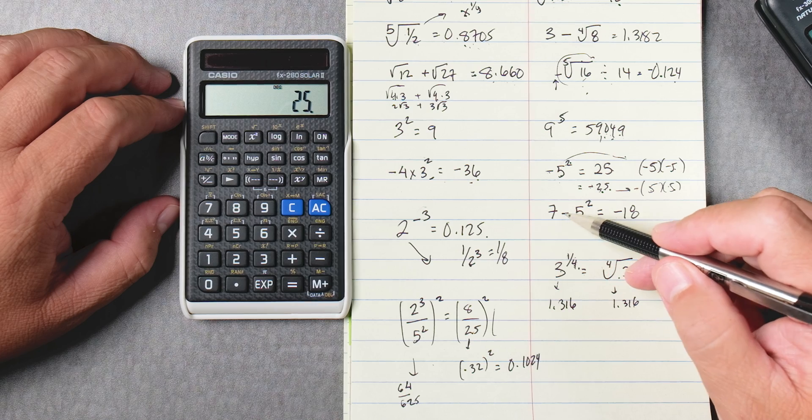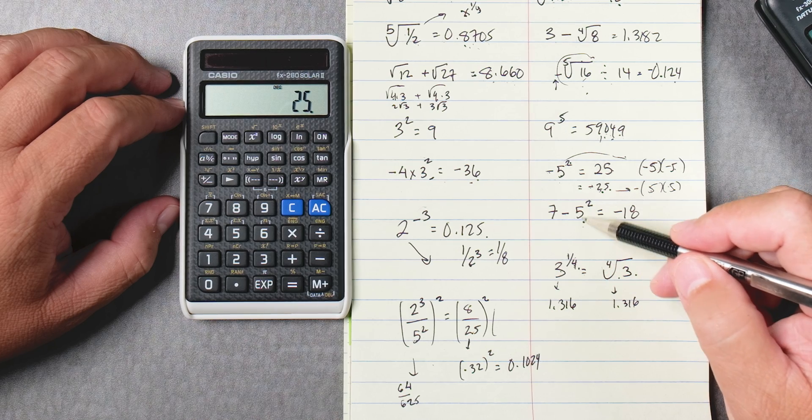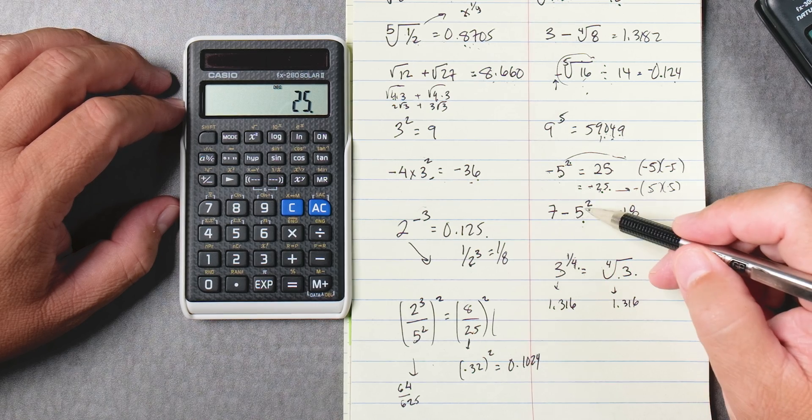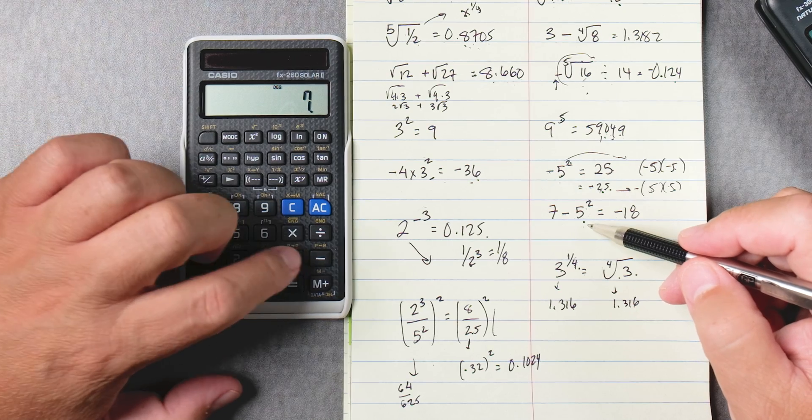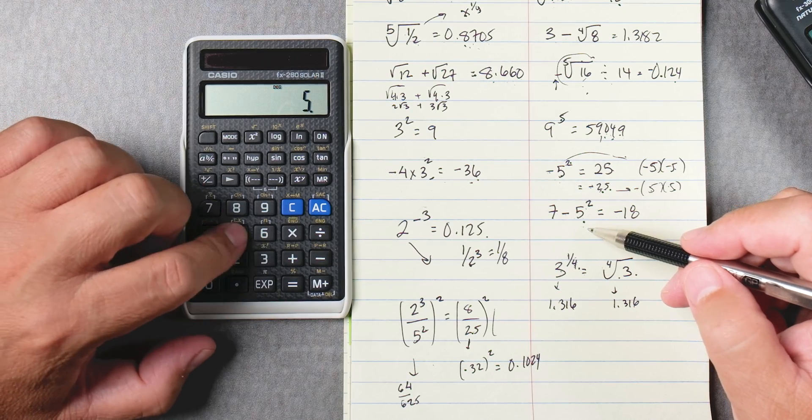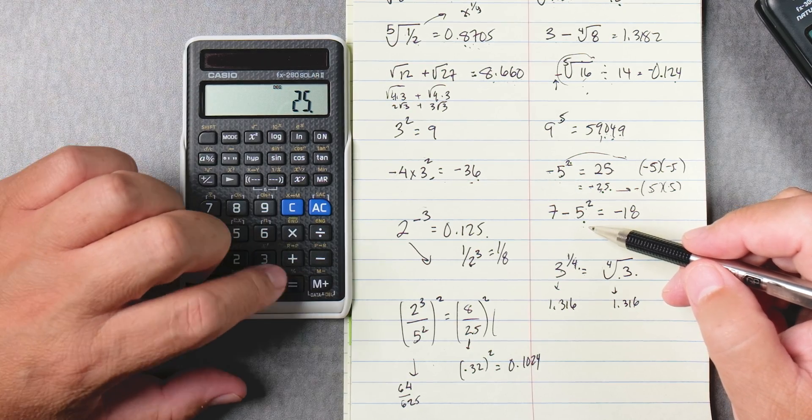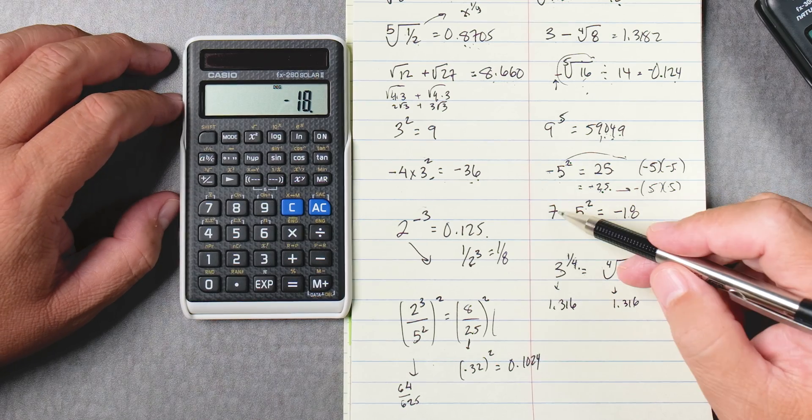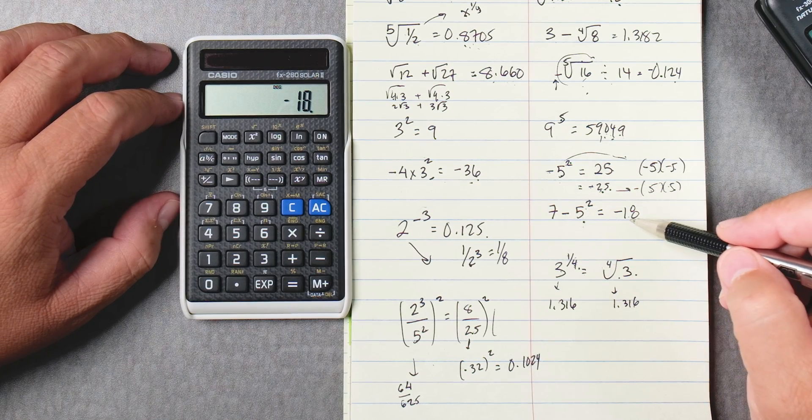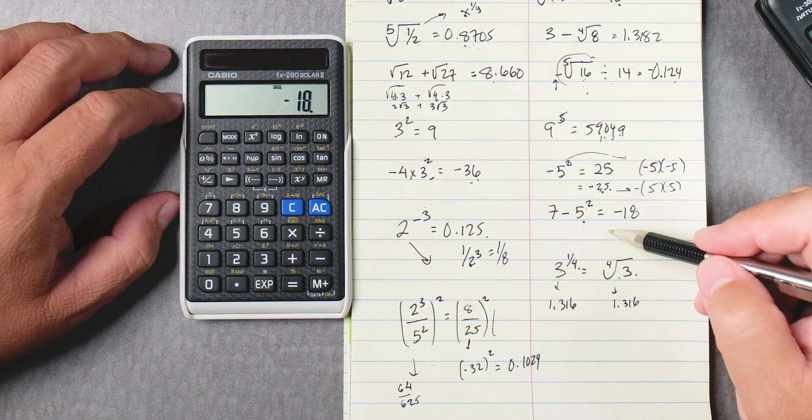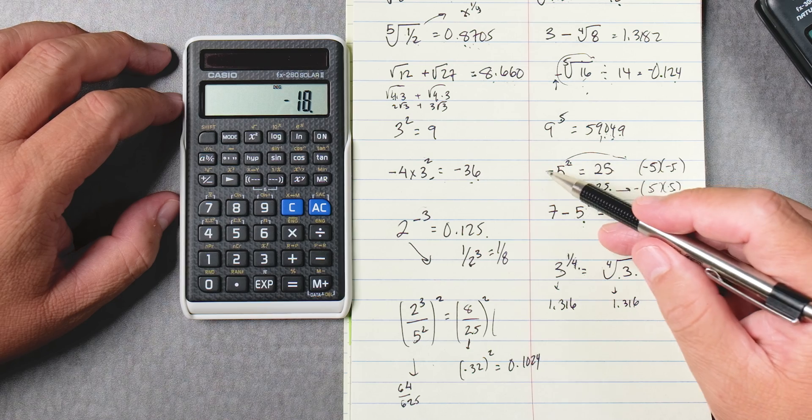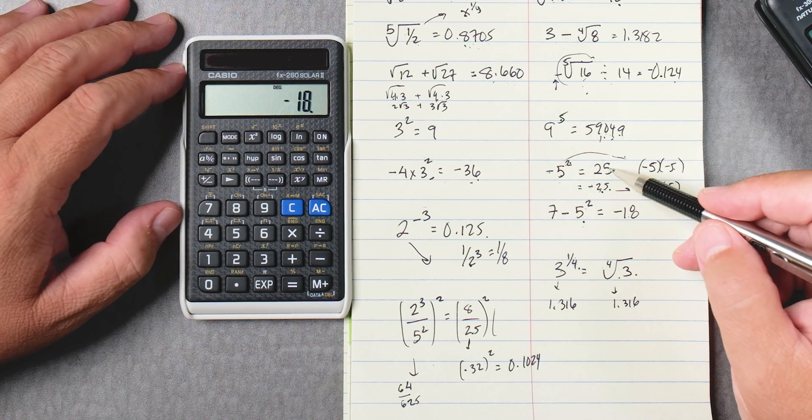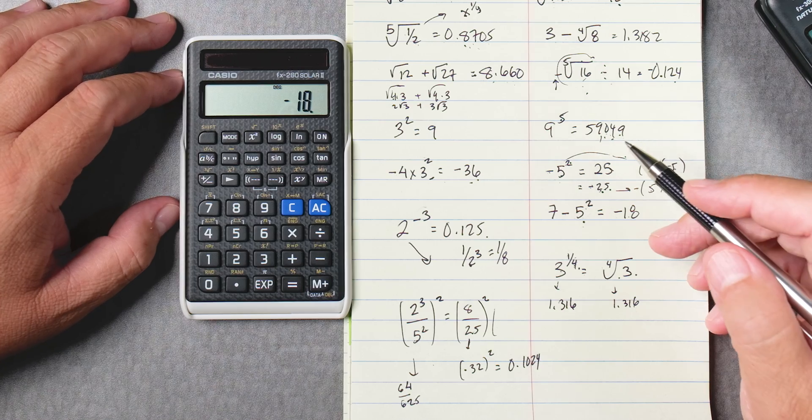So what is the big deal? Well if you do seven take away five squared it's not going to be seven plus 25. Watch. Seven take away five squared equals negative 18. Seven take away 25 is negative 18. Okay so it's doing the right operation. This negative five squared for this calculator is going to be positive 25. Keep that in mind.